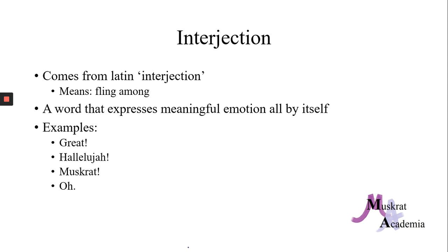Interjections are a lot of fun. It comes from the Latin interjectio. It means fling them on, which kind of makes sense because when you have an interjection, you fling it out into the air. An interjection is a word that expresses meaningful emotion all by itself. For example: great, hallelujah, muskrat, oh.